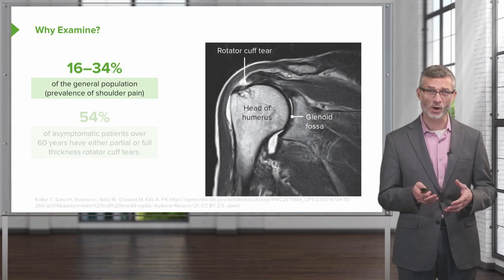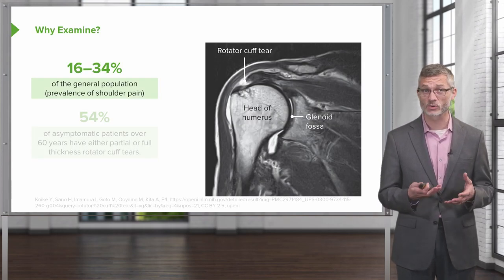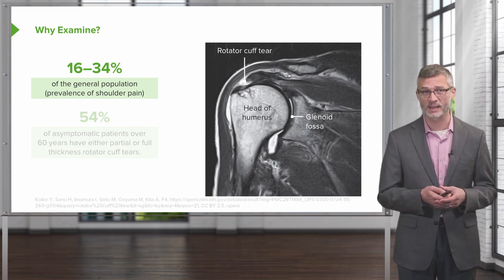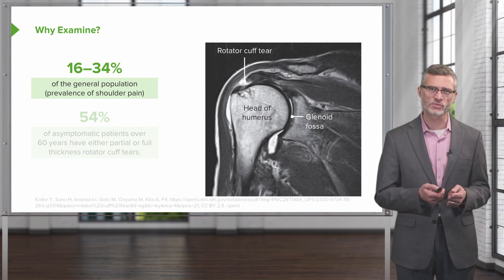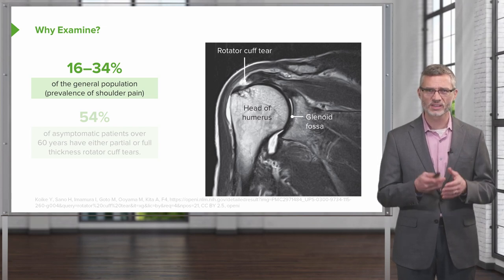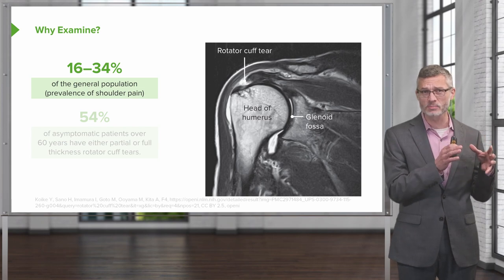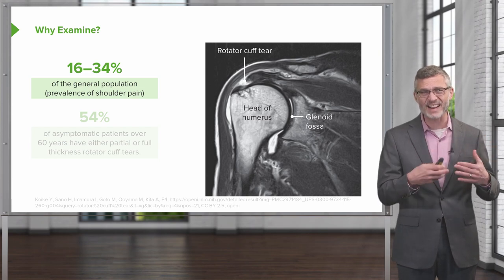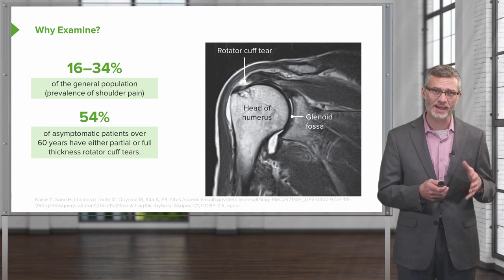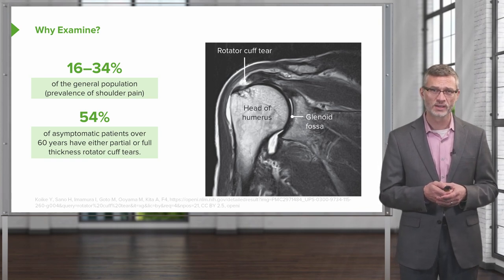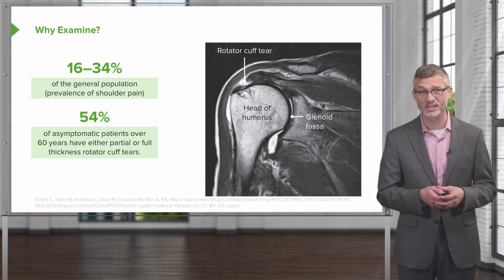Shoulder pain is remarkably common — 16 to 34 percent of the general population have shoulder pain at some time. Similarly to examples from the introductory course, there are many times where we perform an MRI on people with no symptoms and find abnormalities. In fact, 54 percent of asymptomatic patients over 60 years old have evidence of a partial or full thickness rotator cuff tear.